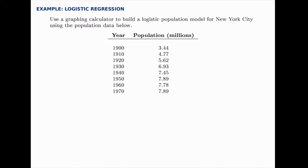First we're going to go to the calculator and enter the data but when we do we'll scale the years as we normally do and make the first year year zero. So the years will look like 0, 10, 20, 30, 40, 50, 60, and 70 instead of 1900 and so on, and the populations will just enter as shown 3.44 up to 7.89.